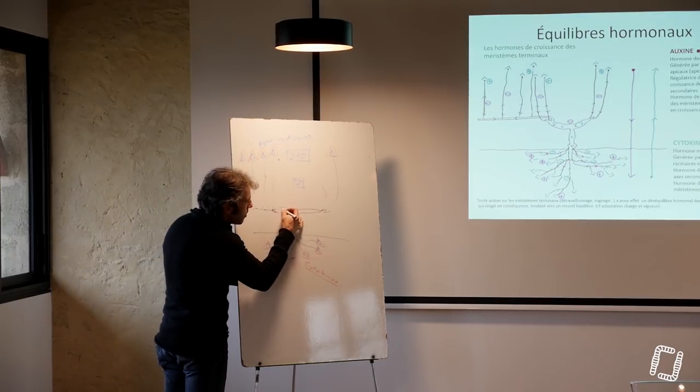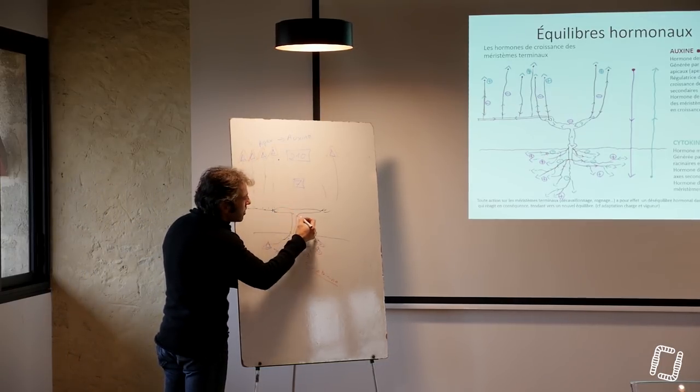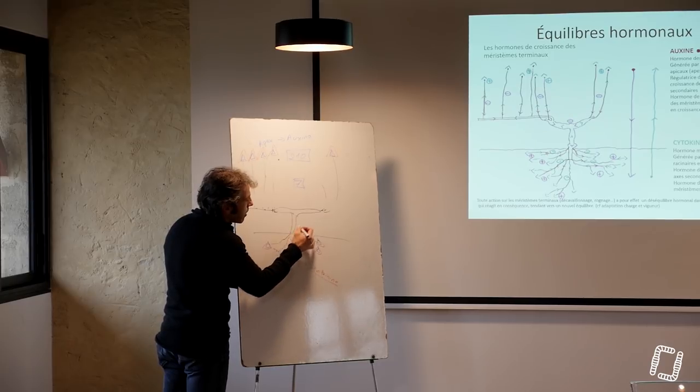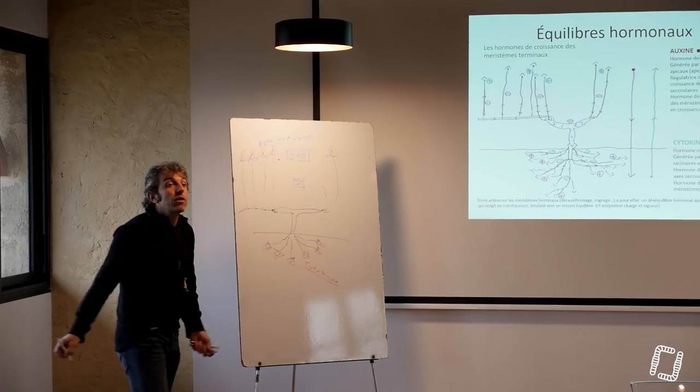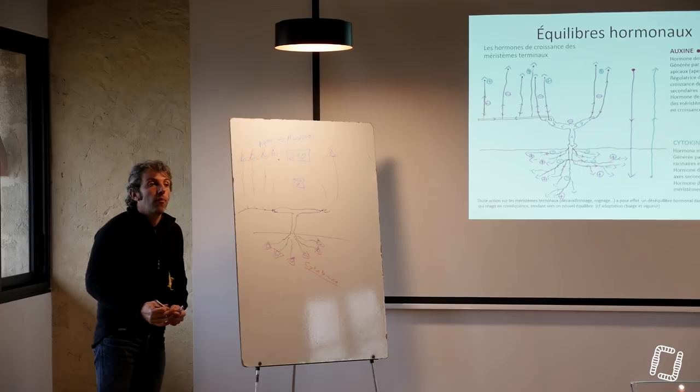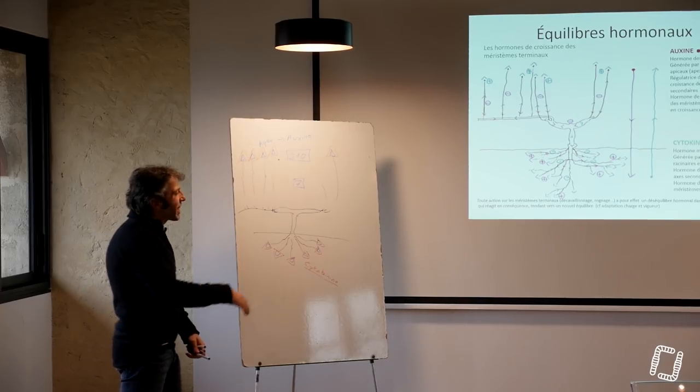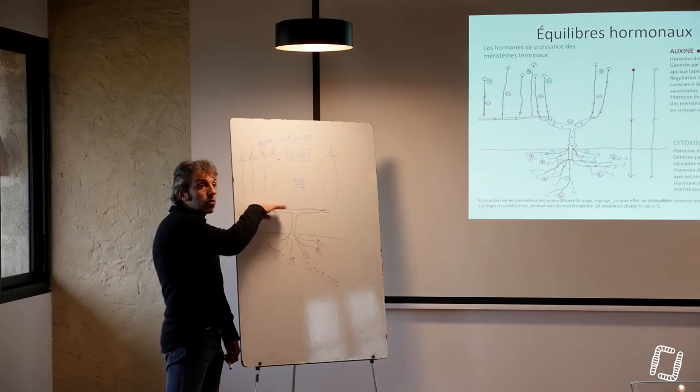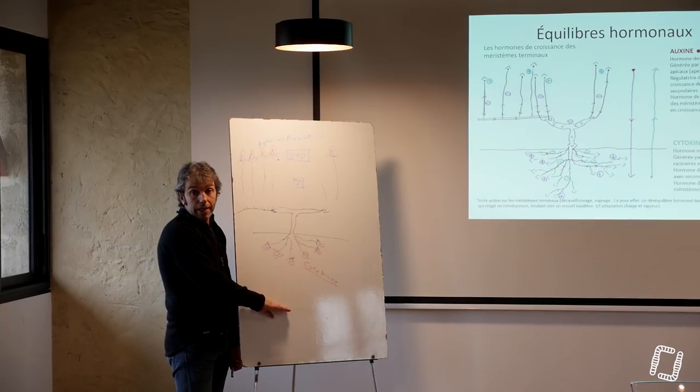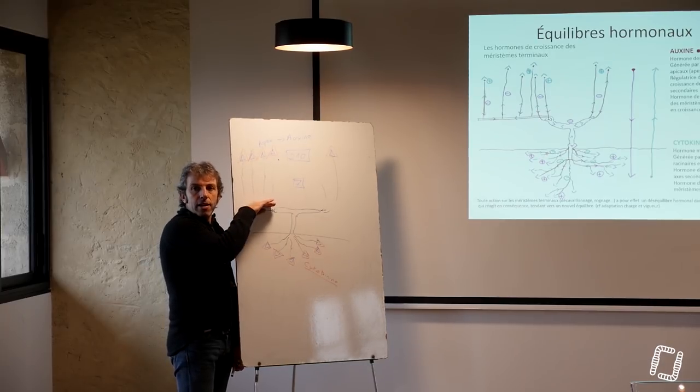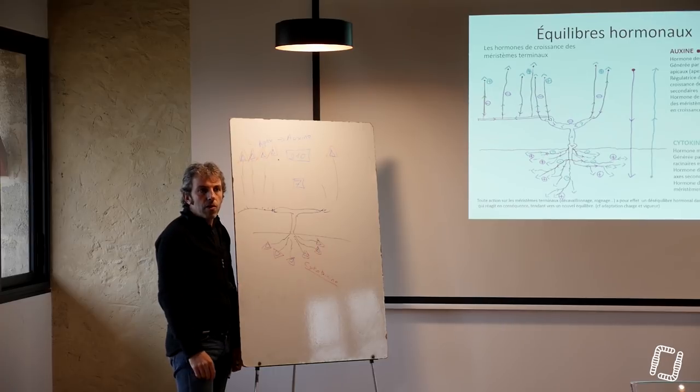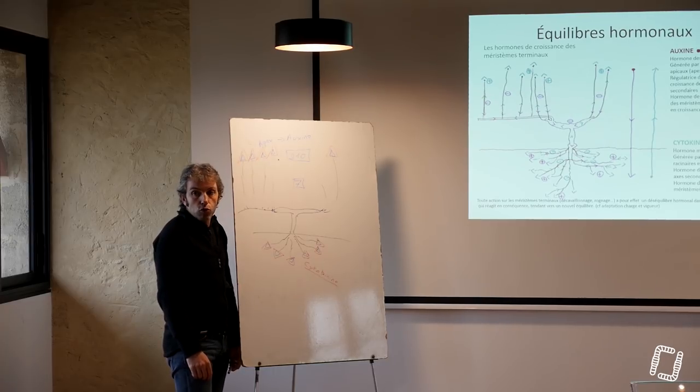La question, ce qui se passe, c'est qu'il y a aussi pas mal de bourgeons en place ici, qui n'ont pas démarré, que sont des bourgeons proventifs des années d'avant. Donc là, on a créé un déséquilibre hyper fort entre le système racinaire, que l'on n'a pas taillé, et la partie aérienne, que l'on a réduit très fortement en nombre de bourgeons.